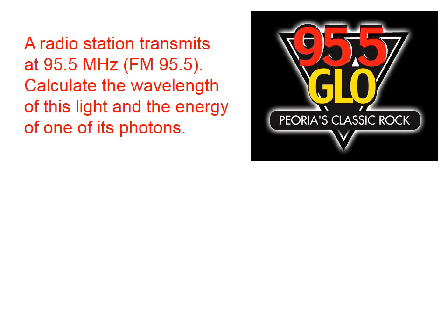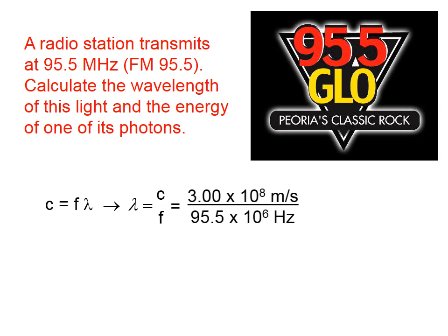Let's try an example problem. A radio station transmits at 95.5 megahertz — that would be FM 95.5. Calculate the wavelength of this light and the energy of one of its photons. FM radio stations transmit radio waves at so many millions of hertz, or megahertz. Since radio waves are a type of light and travel at the speed of light, we take the speed of light and divide by the frequency.